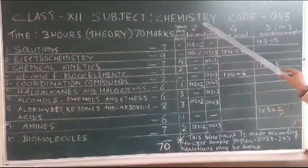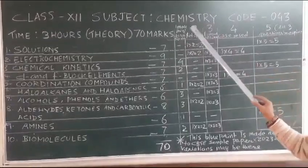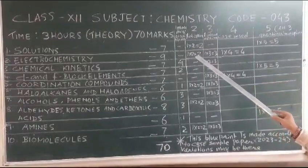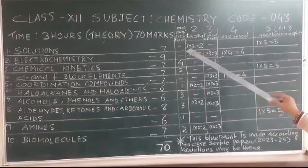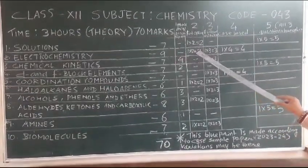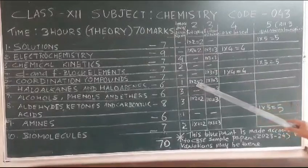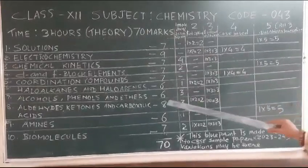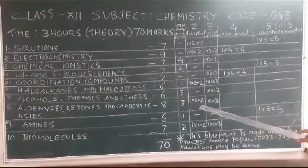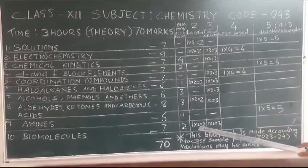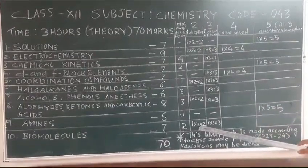In 2 mark question, only 1 internal option would be there. So Solutions 1 question, Electrochemistry 1 question, Haloalkanes Haloarenes 1 question, Aldehydes Ketones and Carboxylic Acid 1 question, and Biomolecules 1 question, 2 mark division.